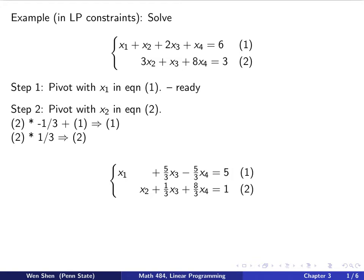Step 2: now we choose to pivot with x2 in equation 2. We want to make the coefficient of x2 equal to 1, and we would also like to remove x2 from equation 1. In order to remove x2 in equation 1, we could multiply equation 2 by negative 1 third, which gives negative x2, and then add that equation on top of equation 1 so that the x2 term becomes 0. We then replace equation 1 with that result.